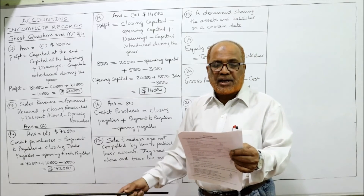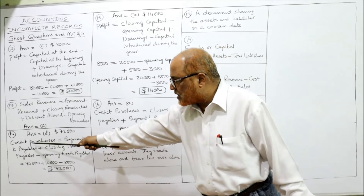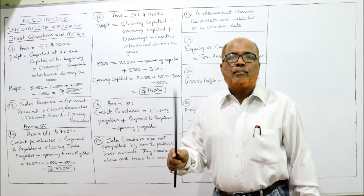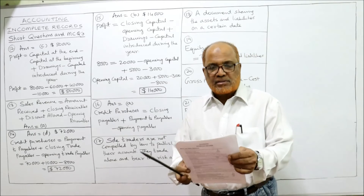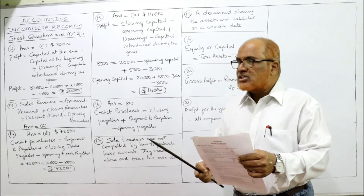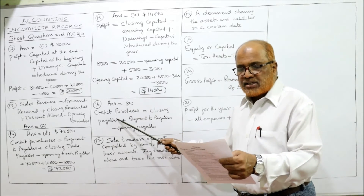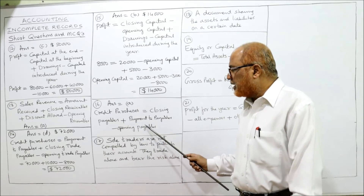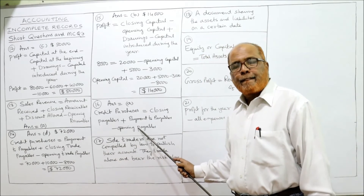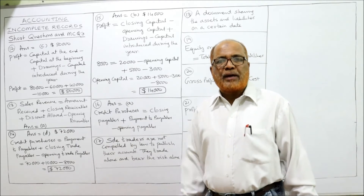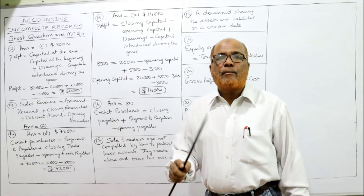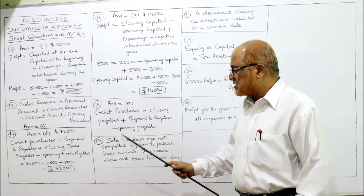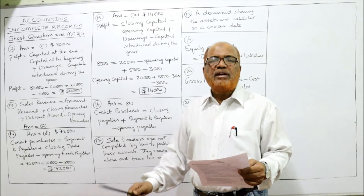Problem 16 is another MCQ with no calculations — how can credit purchases be calculated? Credit purchases = closing payables + payment made to payables − opening payables. That formula will give you credit purchases.